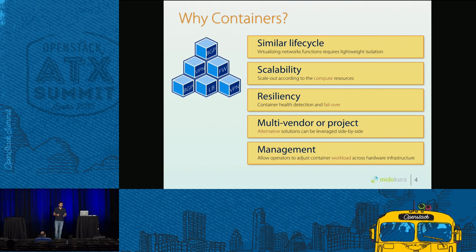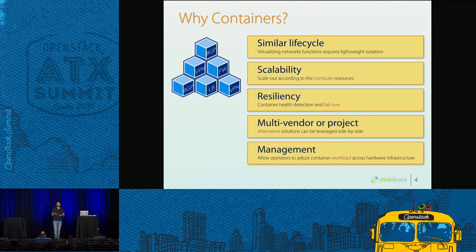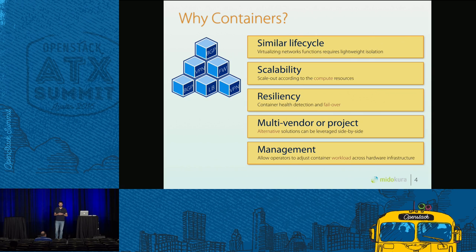The second reason is high availability and scalability. With containers it's possible to move one service from one compute host to a different compute host, for instance if there is a problem or if you have to take it out for maintenance. Another reason is resiliency — by running these network functions as containers it's possible to monitor their health and if there is a problem we simply start a new container on a different host.